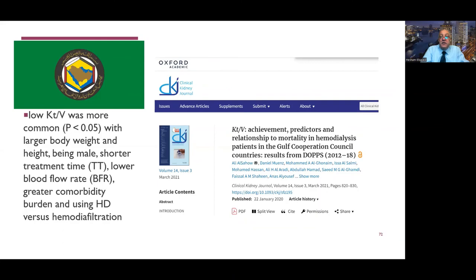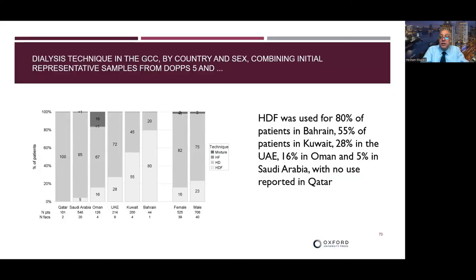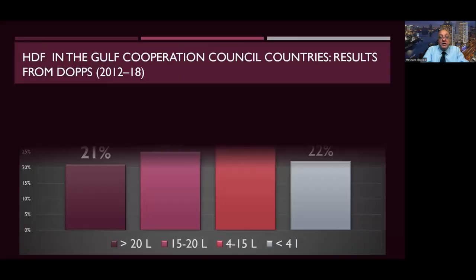In the Gulf area, low KT/V was more common with larger body weight and shorter dialysis time. Hemodiafiltration usage was: 80 percent in Bahrain, 55 percent in Kuwait, 28 percent in the United Arab Emirates, 16 percent in Oman, and 5 percent in Saudi Arabia. However, these percentages are increasing year by year, and more hemodiafiltration uptake is expected.